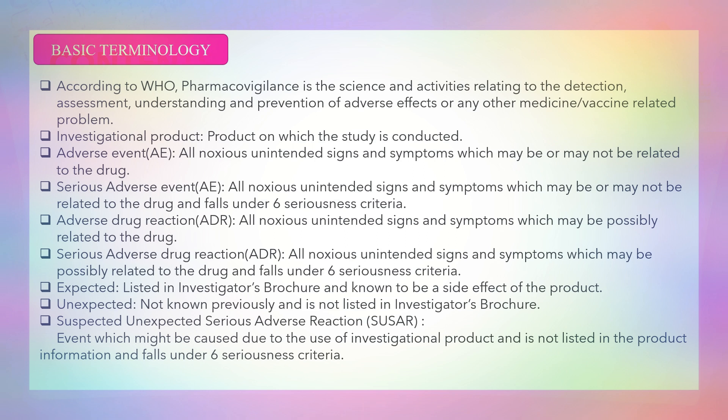A serious adverse event includes all noxious unintended signs and symptoms which may or may not be related to the drug and falls under six seriousness criteria, which we will discuss in the next slide. Adverse drug reaction includes all noxious unintended signs and symptoms which may be possibly related to the drug at doses normally used in man for therapy of the disease or diagnosis. A serious adverse drug reaction similarly falls under the six seriousness criteria.